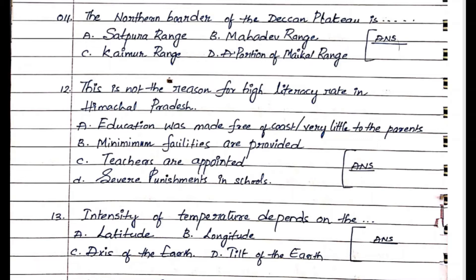Question number 12: This is not the reason for high literacy rate in Himachal Pradesh. Option A. Education was made free or cost very little to parents, Option B. Minimum facilities are provided, Option C. Teachers are appointed, Option D. Severe punishment in schools. The answer is D. Severe punishment in schools.